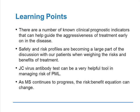The learning points from this case are that there are a number of known clinical prognostic indicators that help us determine who will have aggressive illness and poor prognosis, and can guide when we need to be more aggressive in our treatment strategy. Safety and risk profiles are becoming a very large part of the discussion when weighing risks and benefits of treatment. The JC virus antibody test is a very helpful tool in managing the risk of progressive multifocal leukoencephalopathy. As MS continues to progress, the risk-benefit equation can change — just because a medication was deemed too risky in the past doesn't mean that assessment should not be readdressed in the future. She now has her life back, and that is worth taking the risk.